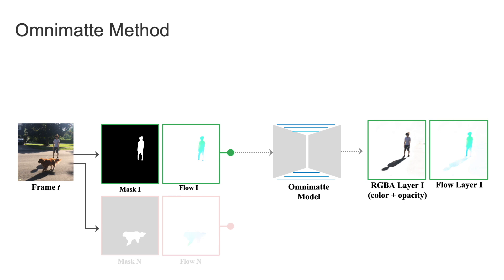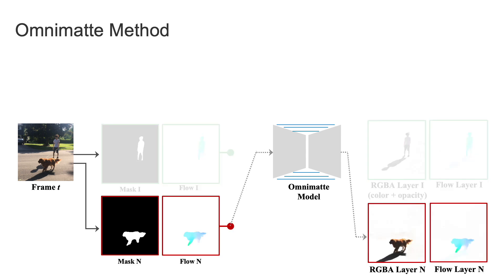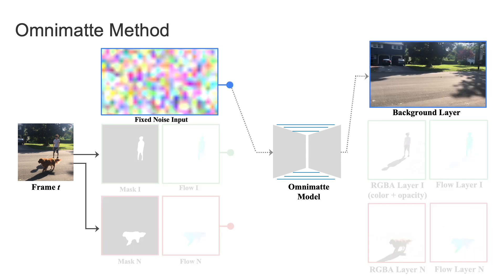We predict all layers separately as well as a background layer using the same network. For the background layer, we input fixed noise and output the unwrapped background canvas for the full video. To get the background layer for a specific frame, we sample from the output using homographies precomputed from a camera motion registration step.